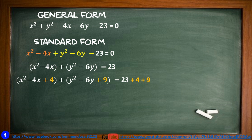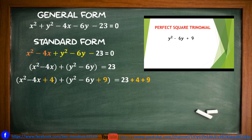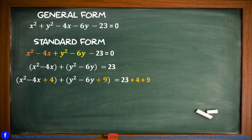Since we now have perfect square trinomials, we factor them into squares of binomials. For x squared minus 4x plus 4: take the square root of x squared to get x, the square root of 4 to get 2, and copy the sign of the middle term to get the quantity of x minus 2 squared. For y squared minus 6y plus 9: square root of y squared is y, square root of 9 is 3, and the middle term sign is minus, giving the quantity of y minus 3 squared.